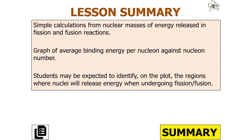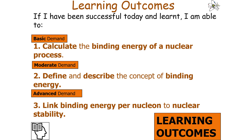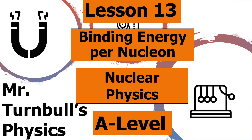To summarise today's lesson: we can carry out calculations from nuclear masses of energy released in fission and fusion reactions. We can interpret a graph of average binding energy per nucleon against nucleon number, identifying regions where nuclei release energy through fission or fusion. We should now be able to calculate binding energy of a nuclear process, define and describe binding energy, and link binding energy per nucleon to nuclear stability. Thank you very much for watching this lesson on binding energy per nucleon in the nuclear physics section of AQA A-level physics — have a lovely day.